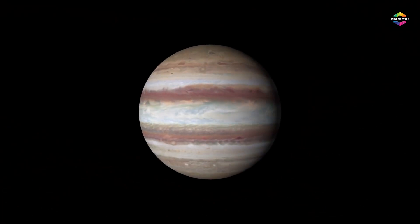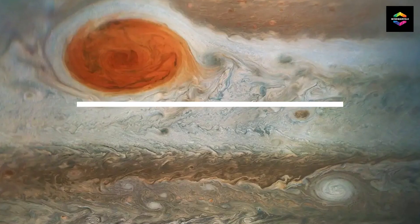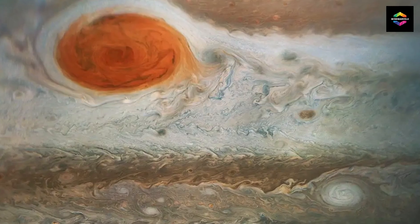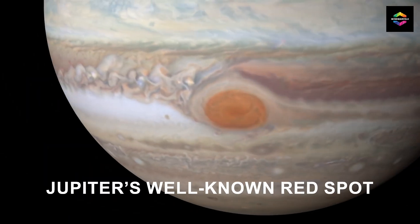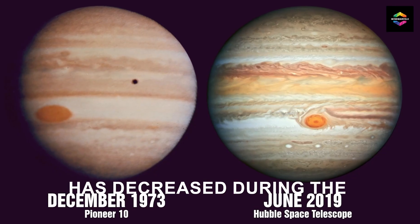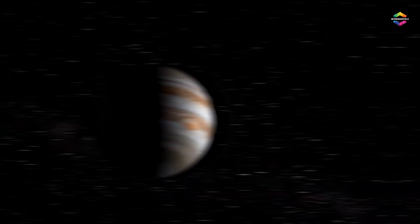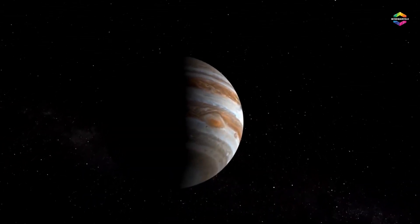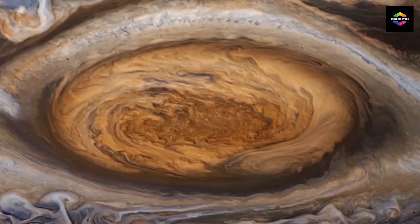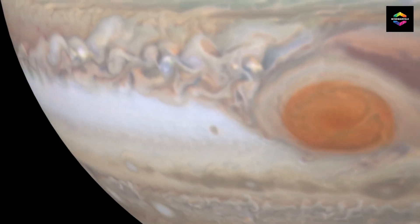Last but not least, number seven, Jupiter's red spot is shrinking. The size of Jupiter's well-known red spot has decreased during the past few decades. This is a massive spinning storm that had the size of three Earths and now the space can only accommodate one Earth.